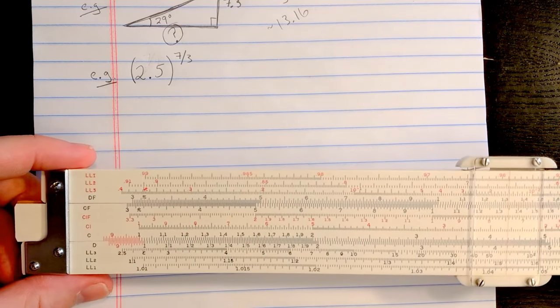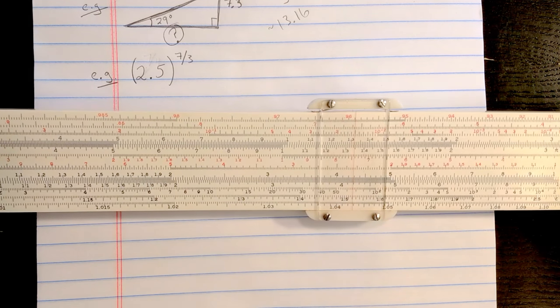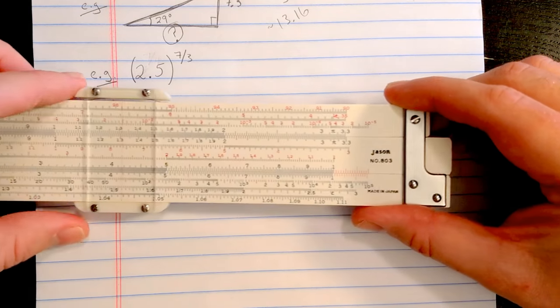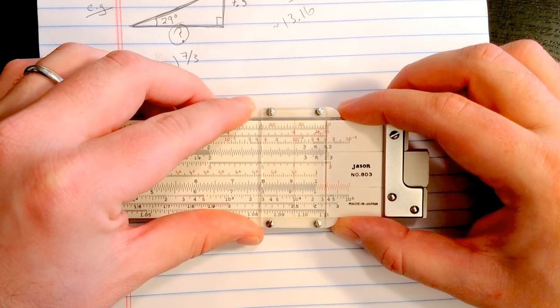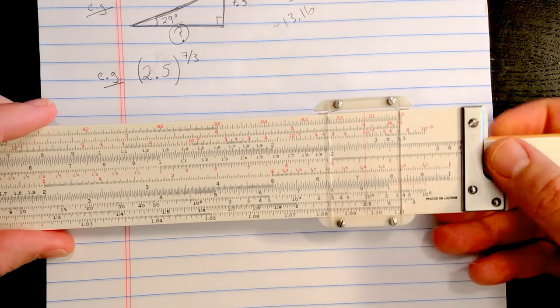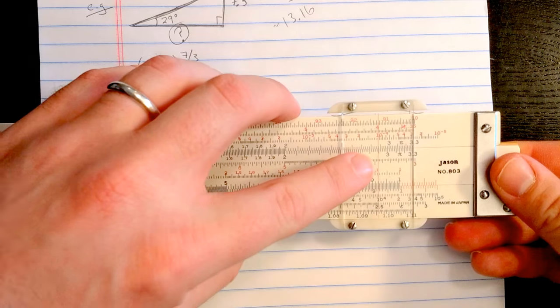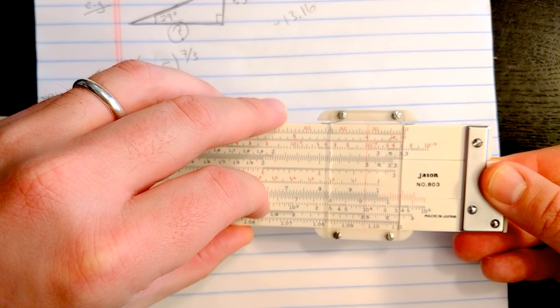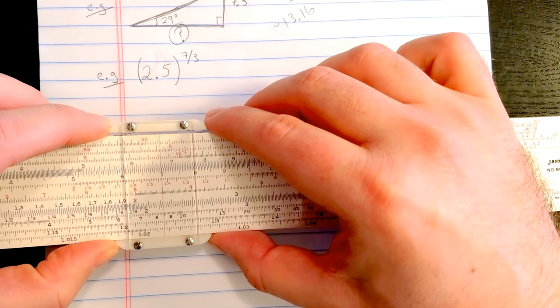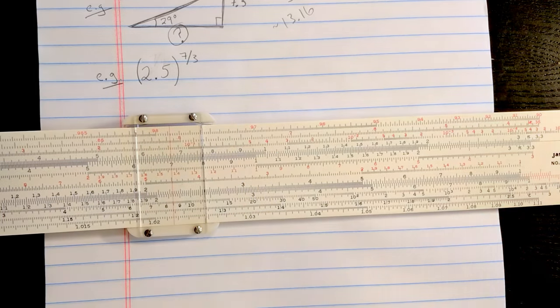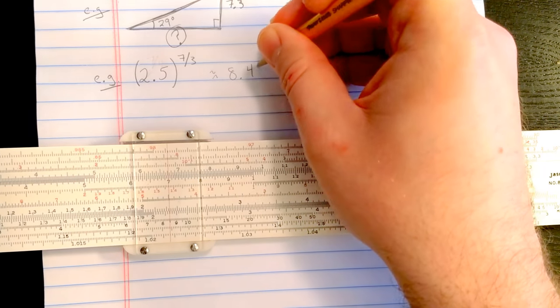For the final example, I'll do 2.5 to the 7 over 3 to just give you another example. So here I'm going to use the log log scales together with the CF scale. So I'll find the 2.5 on LL2 down here. Okay. Then I want to find the 3 on CF. About here. Okay. Then I'll come to the 7 on CF. Read the result. The result has now jumped up to LL3, is here about 8.49.